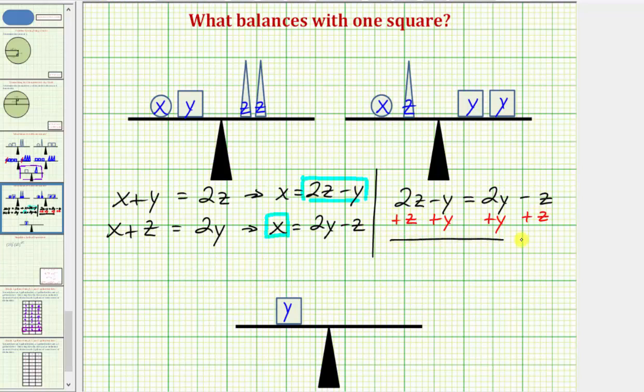Now when we simplify, this would be zero and so would this. So we're left with 2z plus z, which is 3z, must equal 2y plus y, which would be 3y. So if we divide both sides by three.